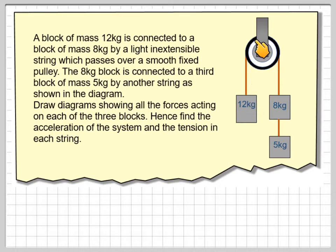So here we've got a 12 kilogram mass passing over a light, smooth pulley fixed to the 8 kilogram mass and then underneath we've got another piece of string holding the 5 kilogram.